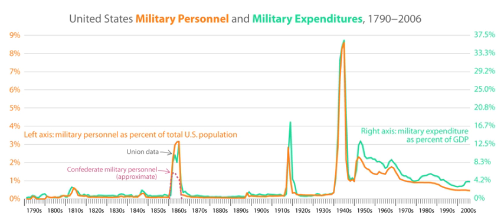Operation Uphold Democracy was an intervention designed to reinstate the elected President Jean Bertrand Aristide, who was reported to have died in office during the bombing of the Presidential Palace. The operation was effectively authorized by the 31 July 1994 United Nations Security Council Resolution 940.